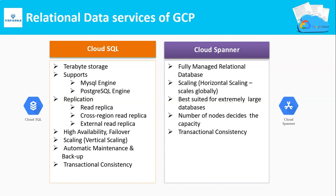On the other hand, Cloud Spanner offers horizontal scaling — increasing compute, memory, and storage by extending Cloud Spanner instances or nodes across multiple locations globally. There is no competition for Cloud Spanner from any other cloud vendor. Both Cloud SQL and Cloud Spanner are suitable for transactional consistency, meaning they can be used as transactional databases.